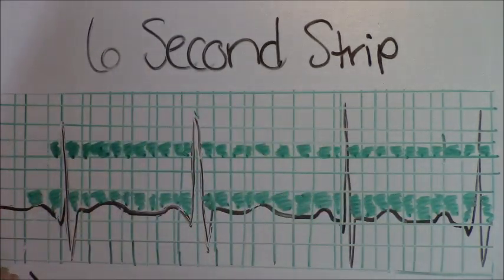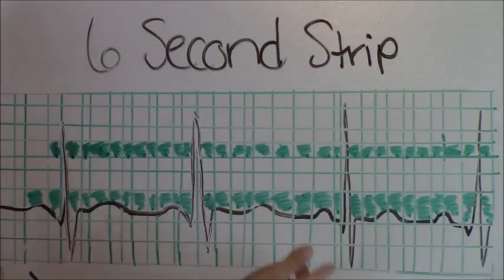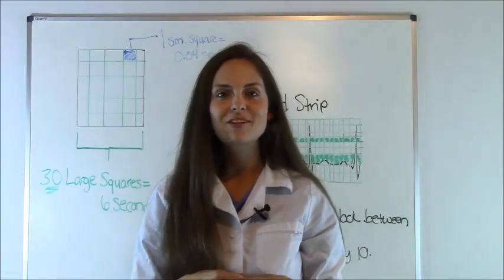So that is how you use the 6 second rule. Very simple. All you have to do is count and look for your large blocks. So that is how you calculate a heart rate using the 6 second rule.